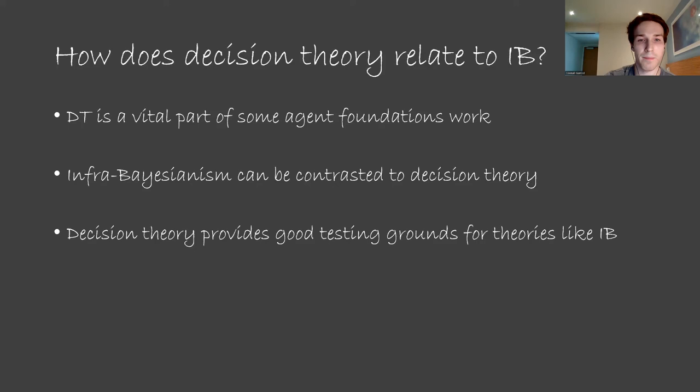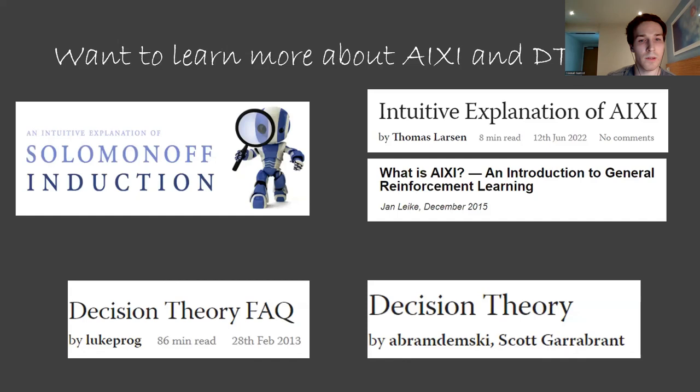If you want to learn more about the topics that I've talked about here, there are lots of good resources. Thomas Larsen's intuitive explanation of ICSI is helpful for understanding in more detail how ICSI makes decisions, and explains the ICSI decision-making formula in a very easy to understand way with lots of different examples. Jan Leiker also has a thorough explanation of ICSI, which starts by initially introducing reinforcement learning. Alex Altair's explanation of Solomonoff induction is great for understanding more about ICSI and is also very easy to understand and is an enjoyable read. There are also lots of good resources for learning about decision theory. Luke Prog's decision theory FAQ post goes through decision theory in detail and is a good first resource to consider. Abraham Densky and Scott Garrabrant's resource is also good for considering how decision theory and embedded agency relate. Links to all of these will be included in the video description. Alright, I will see you in a future video.